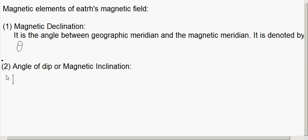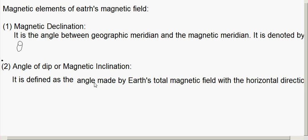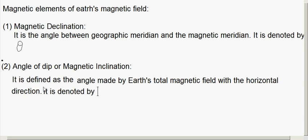The angle of dip or magnetic inclination at a place is defined as the angle made by Earth's total magnetic field with the horizontal direction. It is denoted by delta.